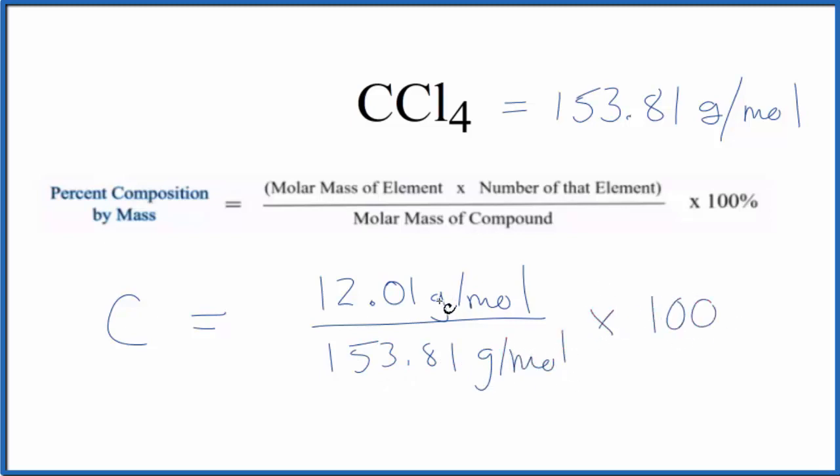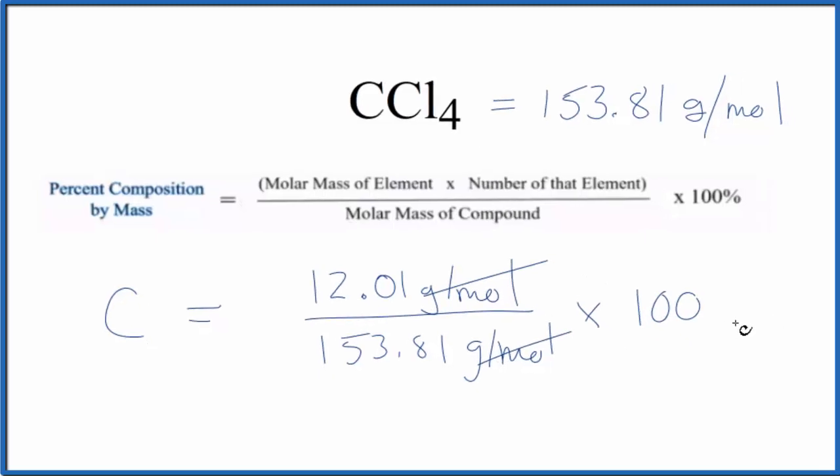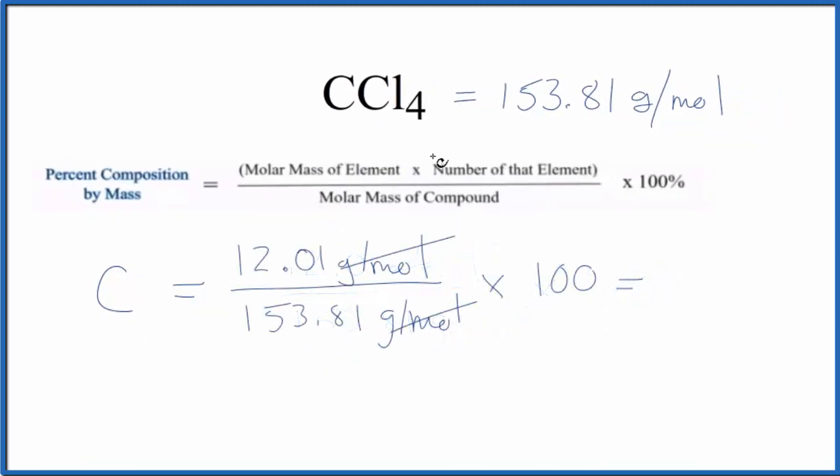Multiply that by 100. These units cancel out and we're left with the percent composition for carbon in CCl4 as 7.81%. Then we do the same thing for chlorine.